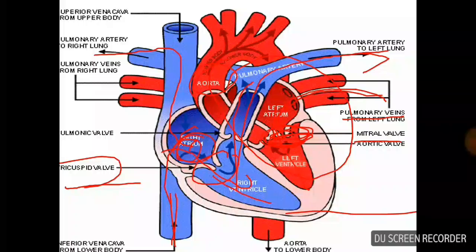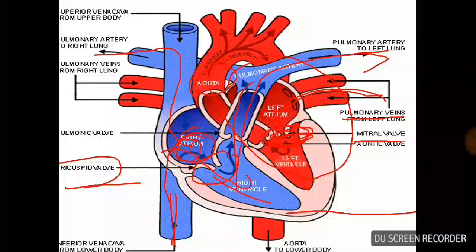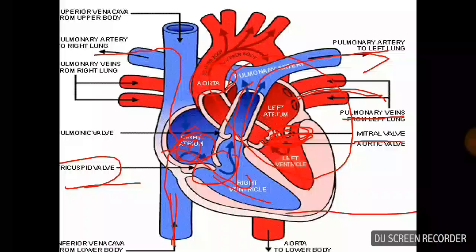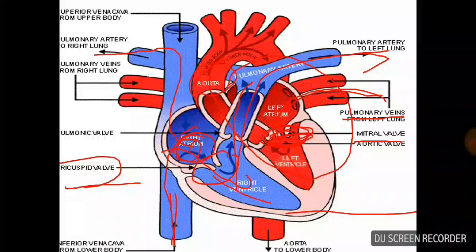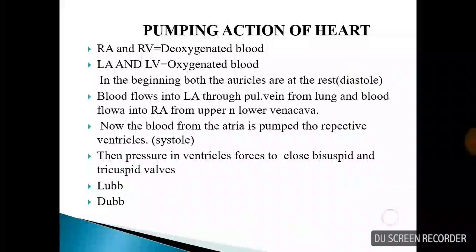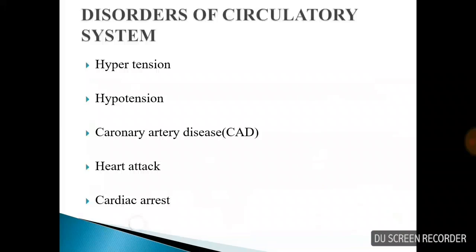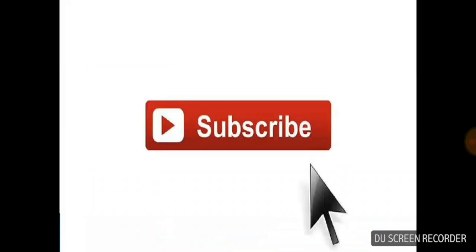This is the basic working of the heart. The blood vessels of the heart are arteries, veins, and capillaries. This covers blood circulation — the important and basic concepts. Friends, if you liked this video, please subscribe. Thank you.